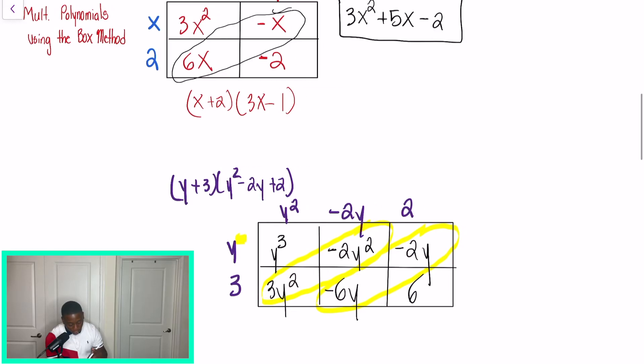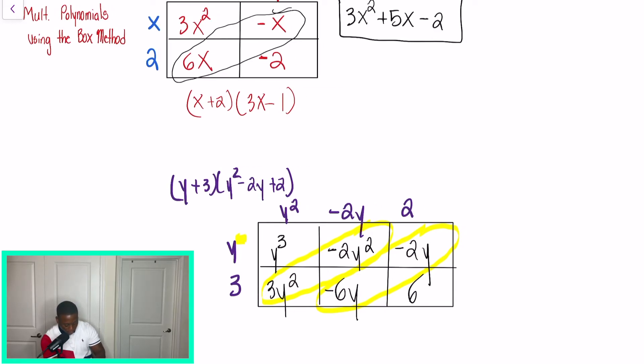So if we're writing this in standard form, our final answer would be y to the third power plus y squared, because 3y minus 2y, it's just y squared. Well, now when we get to 6y and negative 2y, please understand, and I actually have this wrong. This should be positive. So let's make a correction. This should be positive. So we have a positive 2y, and we're adding a negative 6y with it. So this is going to give us negative 4y, and then we're going to have plus 6 at the end.